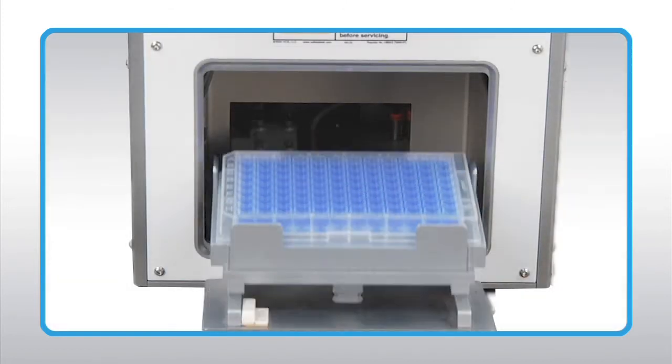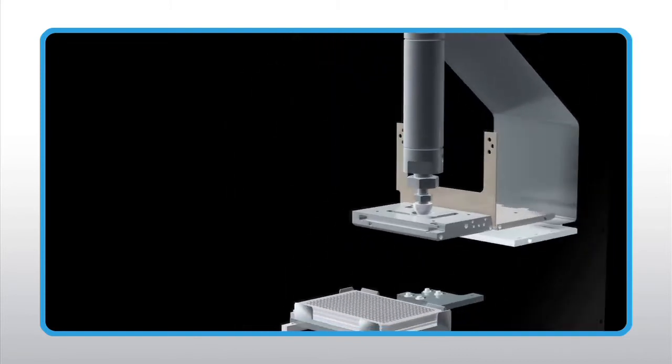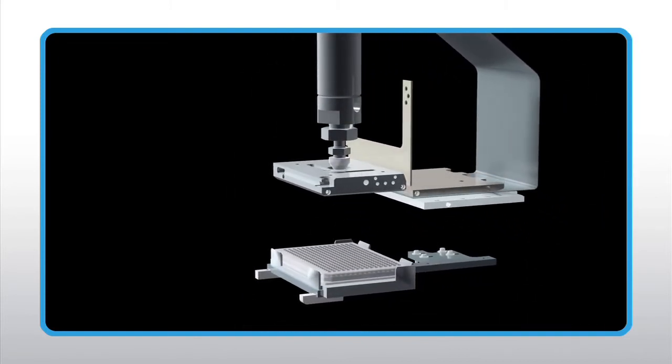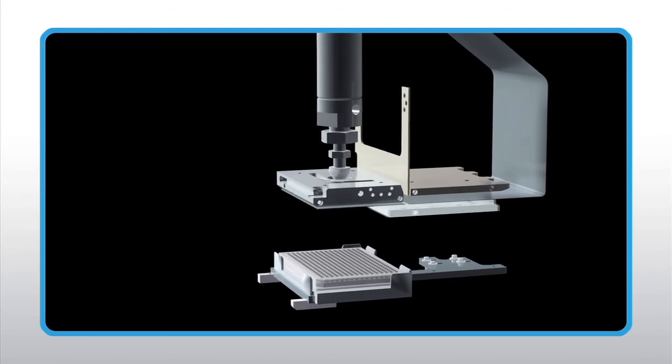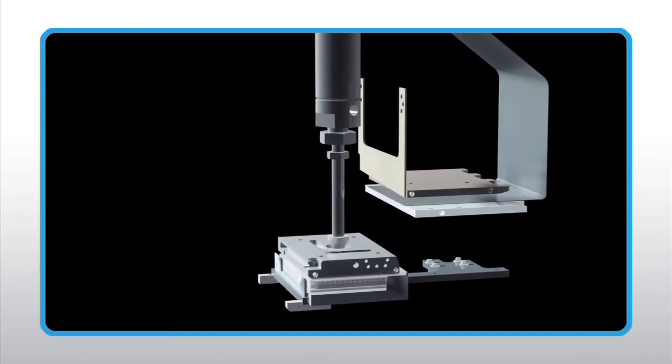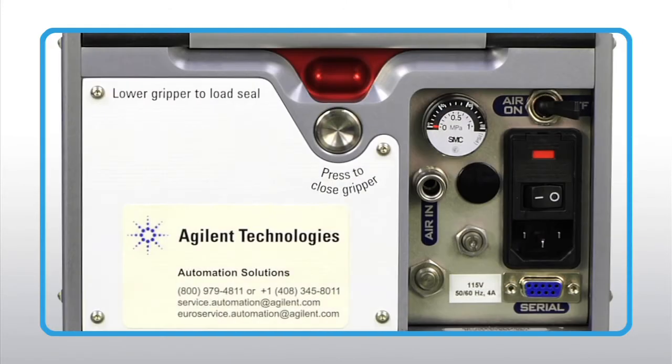The sealing cycle begins when the automated plate stage delivers the microplate to the hot plate sealing position. Roll-fed heat seal enters the rear of the chamber. A vacuum transfer plate delivers the heat seal to the sealing position, where it is cut to size and applied to the microplate.